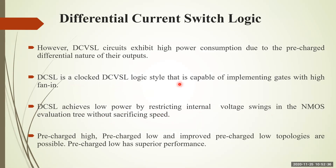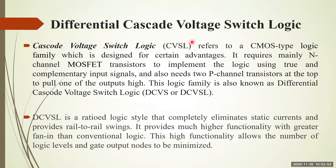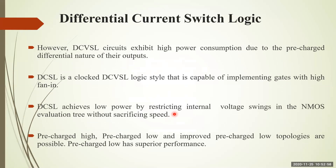Internally, the voltage swing can be reduced by applying appropriate inputs to the NMOS logic. This is done through the analog design process, and because of that, speed is not compromised — low power consumption can be achieved without sacrificing speed. Pre-charge high, pre-charge low, and improved pre-charge low topologies are all possible using this differential cascade switch logic, and even in the pre-charge low state, superior performance is achieved.